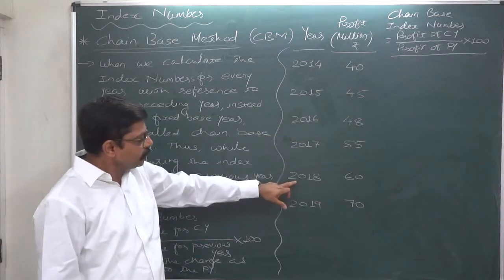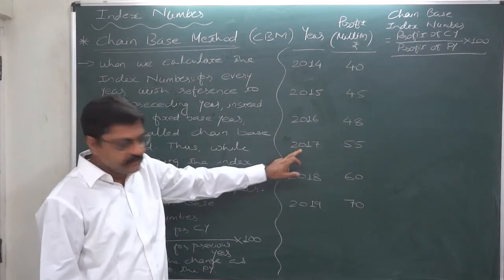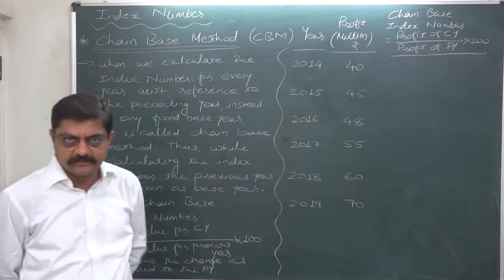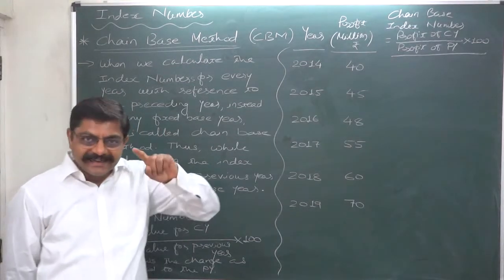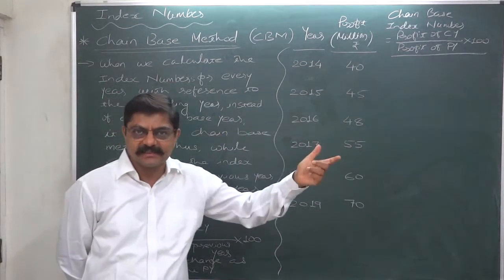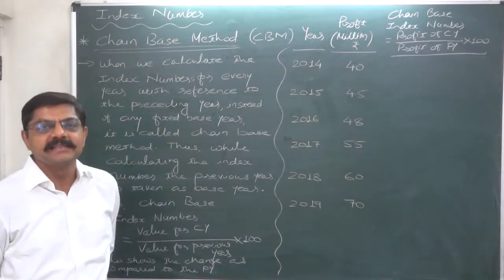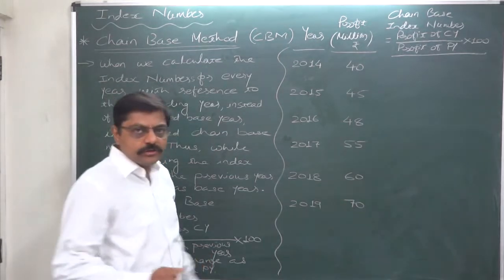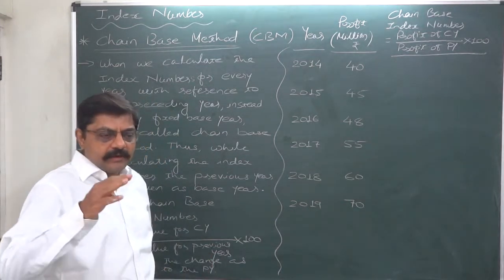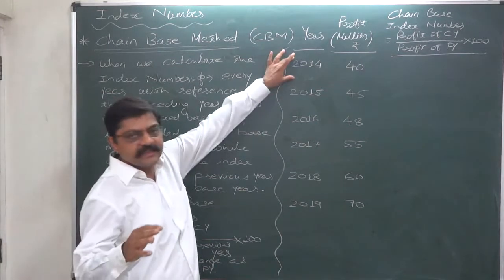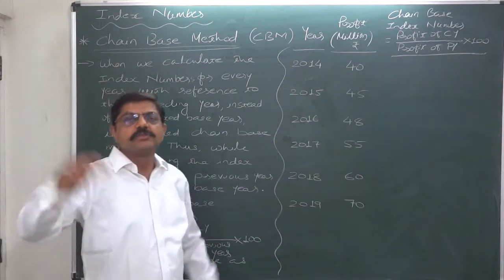For 2018, 2017 becomes Base year, and for 2019, 2018 becomes Base year. So a chain of Base years can be seen there. That's why it is called chain Base index numbers. Now, as usual, the index number for the first year of the data is taken as 100 because there is no Base year for that—the year itself is Base year, so it is 100.